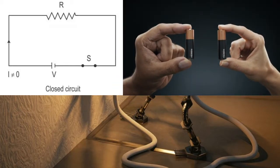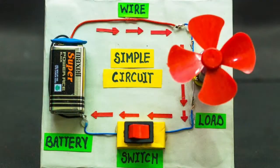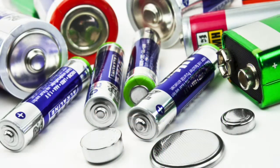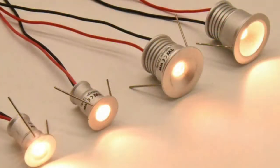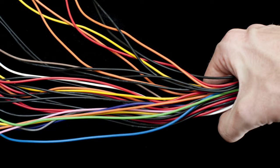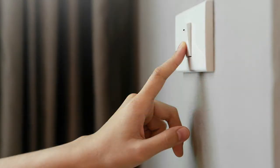Every electric circuit has four basic components: a source like an electric cell, an electrical device like an electric bulb, connecting wires, and a switch to start or stop the electric flow. Now we will learn symbols of some electric circuit components.